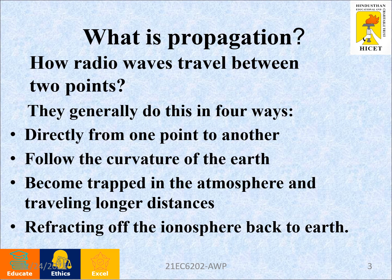What is propagation? Propagation is nothing but how radio waves are travelled between two points. They generally do this in four ways: directly from one point to another, following the curvature of the earth, becoming trapped in the atmosphere and travelling longer distances, or refracting off the ionosphere back to earth.